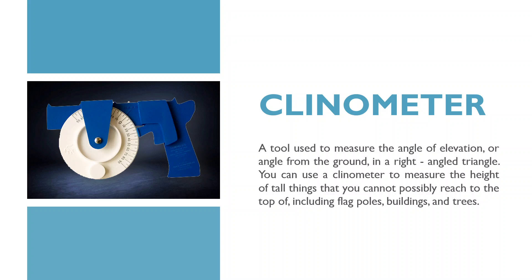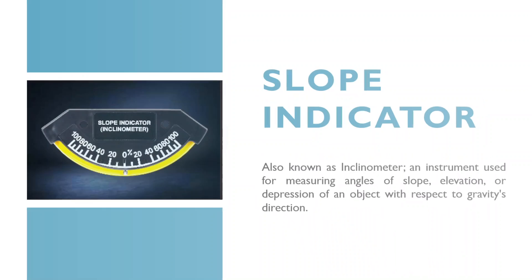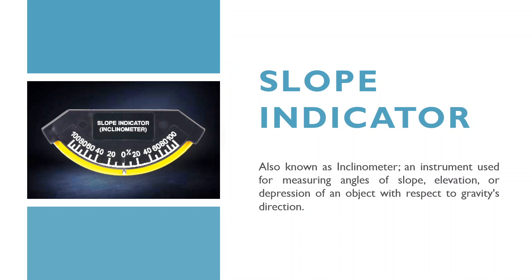First on my list is the clinometer. A clinometer is a tool to measure the angle of elevation or angle from the ground. In a right-angled triangle, you can use a clinometer to measure the height of tall things that you cannot possibly reach the top of, including flag poles, buildings, and trees. Next is the slope indicator or inclinometer. A slope indicator or inclinometer is an instrument used for measuring angles of slope, elevation, or depression of an object with respect to gravity's direction.